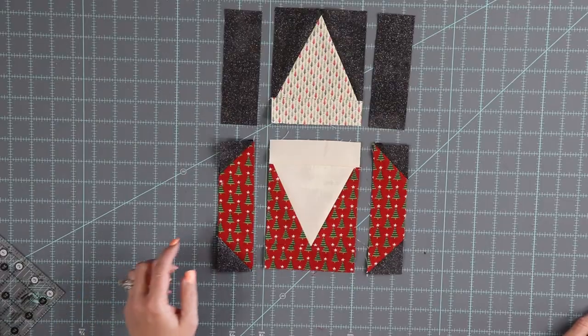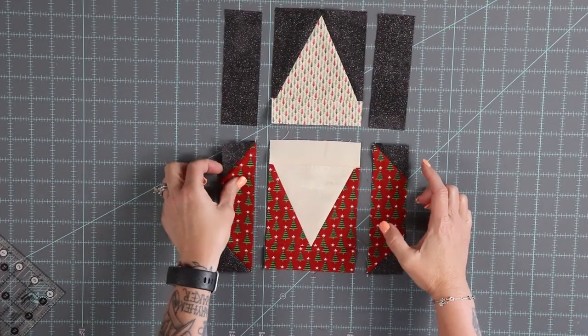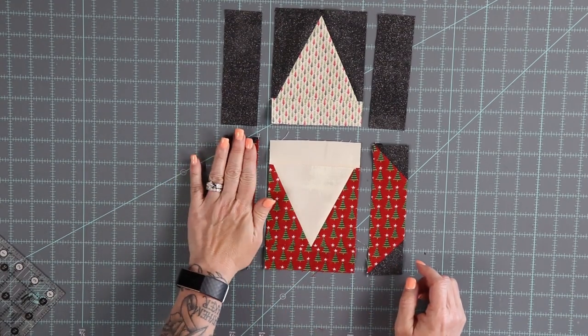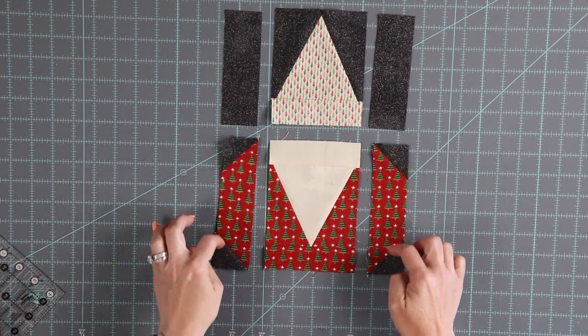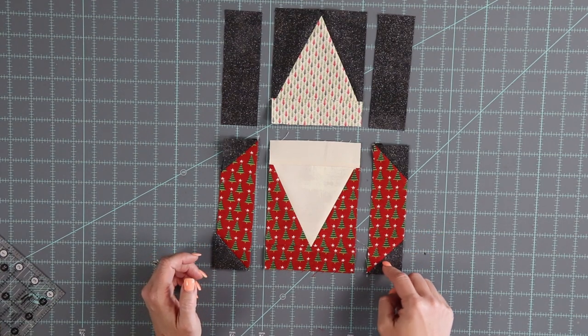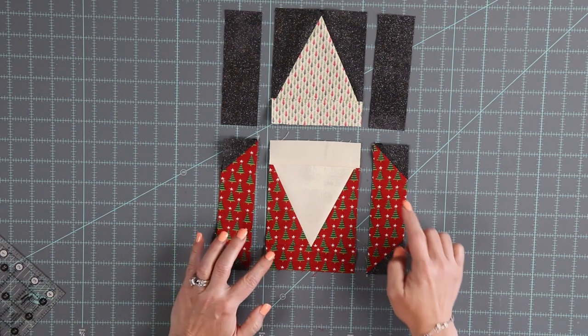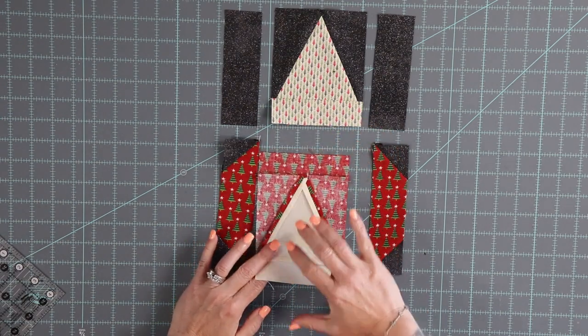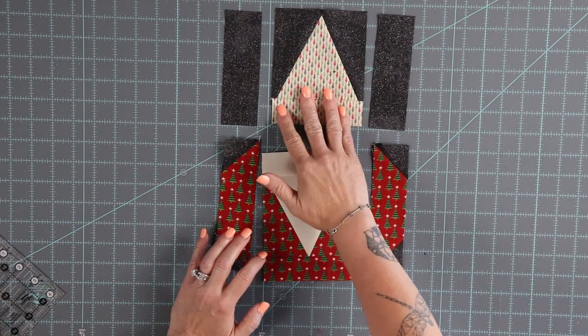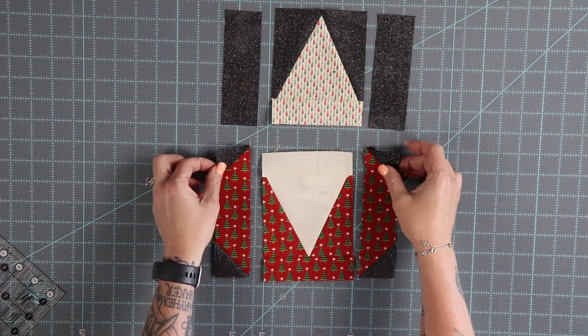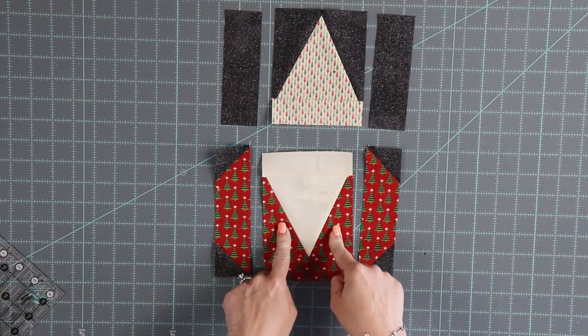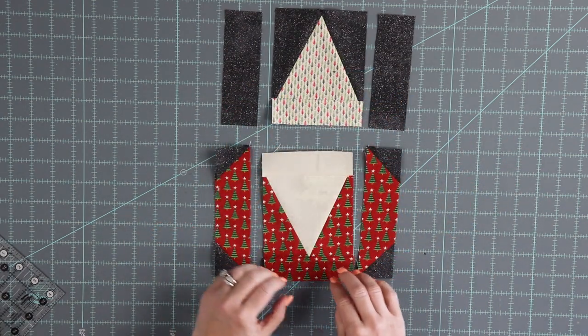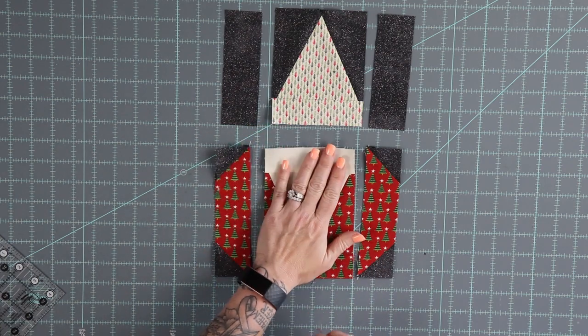All right, so we have our rectangles, as you can see I trimmed off the excess. I pressed them open because I like pressing open, otherwise press to your outer dark sides or if you're using a light background press into the red. You can see I've already added these little sashing pieces to the top and bottom of the beard and the bottom of the hat. So this guy is going to be pretty simple, we're going to put these pieces onto the sides and then top to bottom. I'll take him to the machine and we'll show you how he looks when he's all done.